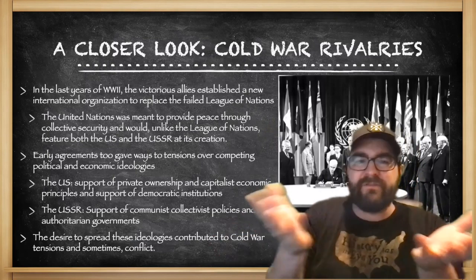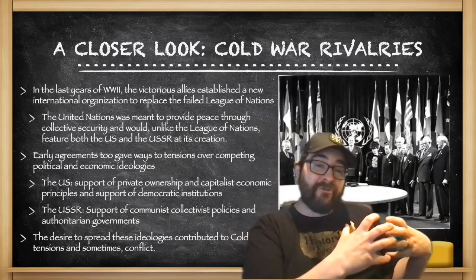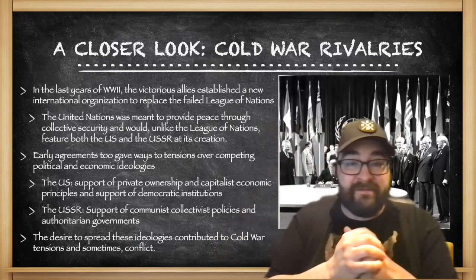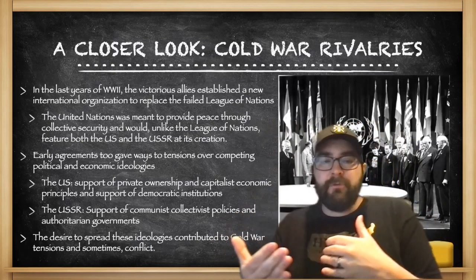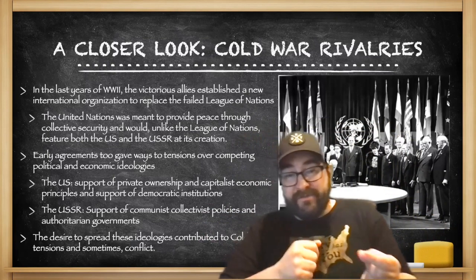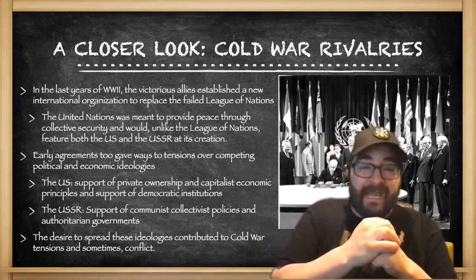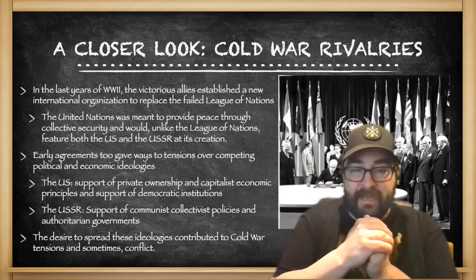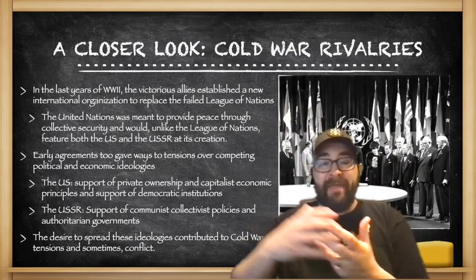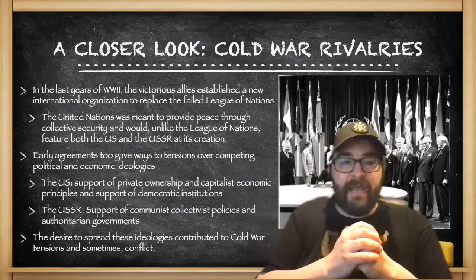In the last years of World War II, the victorious allies put together a new international organization to replace the failed League of Nations. The new United Nations was meant to provide peace through collective security, and would feature both the United States and the Soviet Union at its creation. Early agreements, though, would quickly give way to tensions over competing political and economic ideologies — the United States supporting private ownership, capitalism, and democratic institutions, while the Soviet Union would support communist collectivist policies and authoritarian governments.